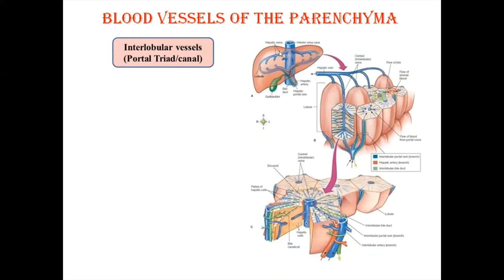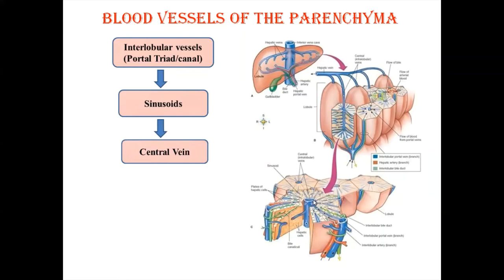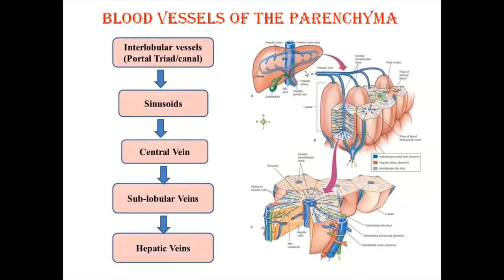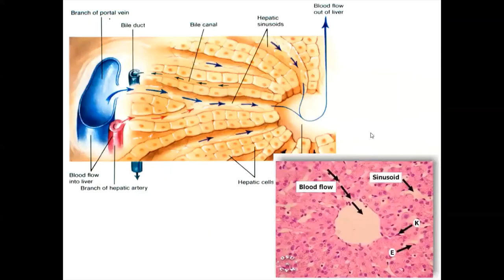Regarding blood flow in the liver parenchyma: starting from the classical lobule, at the periphery we have interlobular vessels in the portal triad or portal canal. From these, blood goes toward the sinusoids, then to the central vein. The central veins form sublobular veins, sublobular veins form hepatic veins, and hepatic veins open into the inferior vena cava. Both arterial and venous blood come toward the central vein, then go to sublobular veins, hepatic veins, and finally the inferior vena cava.